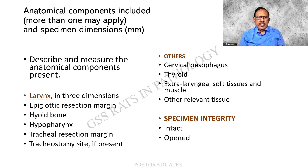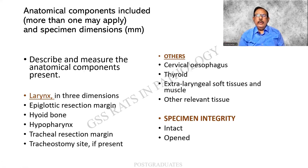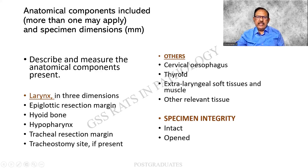The anatomical components include the various things mentioned. We are supposed to measure the larynx in three dimensions and note all structures. There must be a comment on the tracheostomy site if present — that has its own importance. Other structures such as the cervical esophagus, the thyroid, extralaryngeal soft tissue muscle, and other relevant tissue must be noted. The specimen integrity — whether it is intact or has already been opened — should also be commented on.